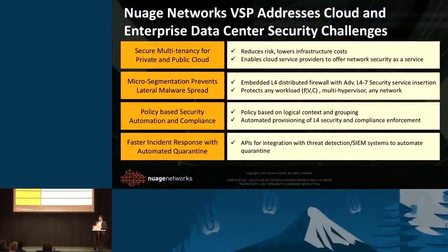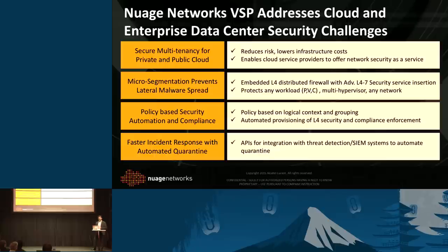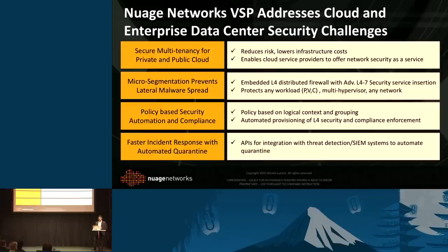To summarize, the Nuage VSP provides secure multi-tenancy for private and public cloud without a significant investment in infrastructure. It gives you the flexibility to segment the network as your needs evolve, with a built-in layer for distributed virtual firewall. There's a flexible service insertion that allows you to build a best-of-breed solution for above layer four protection. It's all policy-based with a template-based approach — you design once and replicate. For compliance, you can easily check, validate, and adjust accordingly — you don't have to touch a thousand entries, just modify your master and it's automatically supplied across the network. And faster response through our partner API integration allows partners to program or reprogram the network to take action quickly.